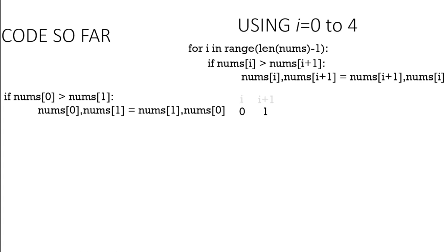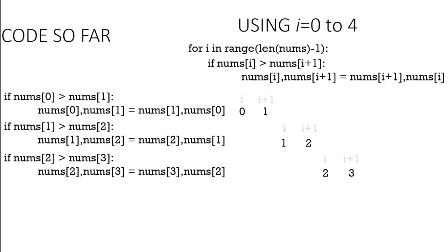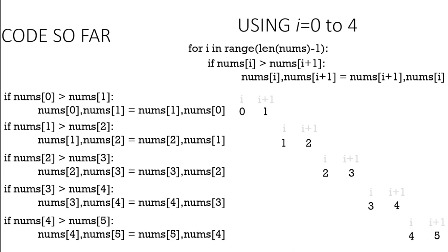Now what we could do instead of just using i as zero is increase i by one every time we compare elements. So if we look at our code and we look at i and i plus one, when we start we have i is zero so i plus one is one. Then the next time in the loop, i is going to be one and i plus one is going to be two. And then it's going to be two and three, three and four, and finally four and five.